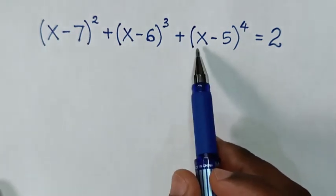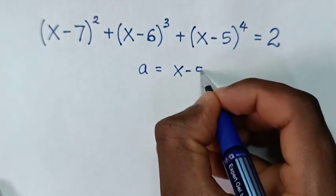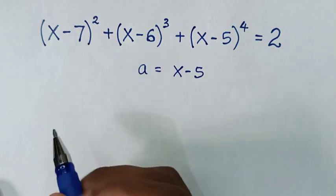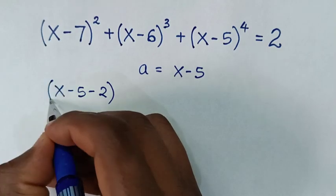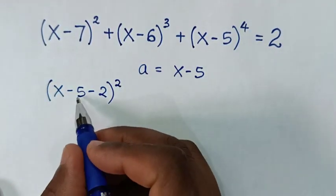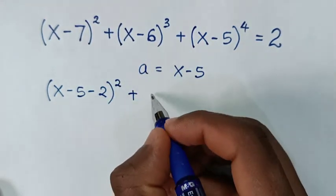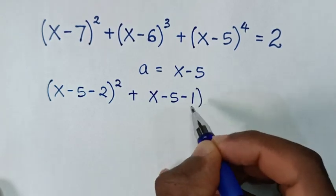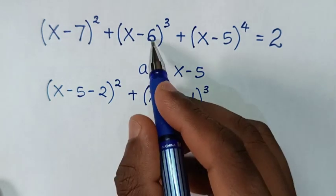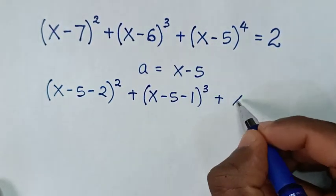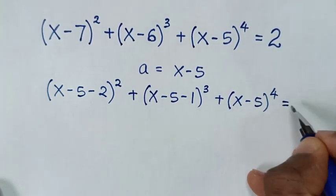First we make x-5 common, so we let a = x-5. Then x-7 is the same as (x-5) - 2, since -5 - 2 = -7. And x-6 is the same as (x-5) - 1, since -5 - 1 = -6. So the equation becomes (a-2)² + (a-1)³ + a⁴ = 2.